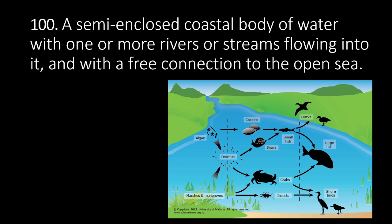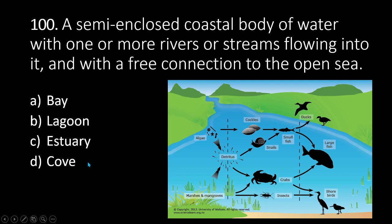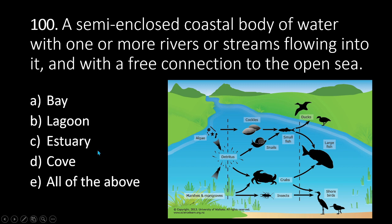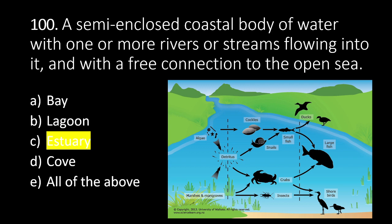Number 100: a semi-enclosed coastal body of water with one or more rivers or streams flowing into it and with a free connection to the open sea. A. Bay, B. Lagoon, C. Estuary, D. Cove, E. All of the above. The answer is C. Estuary. An estuary is a semi-enclosed coastal body of water with one or more rivers or streams flowing into it and with a free connection to the open sea. That's all for now, see you soon.